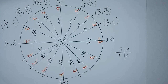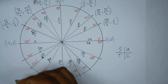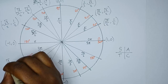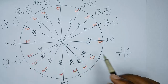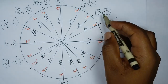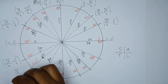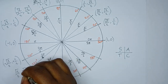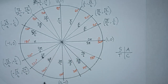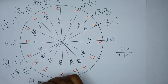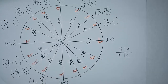When we come to the third quadrant, only tan is positive, meaning both cos and sin are negative. Using the same coordinate values, the coordinates in the third quadrant are (−root 3 over 2, −1/2), (−root 2 over 2, −root 2 over 2), and (−1/2, −root 3 over 2).